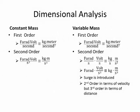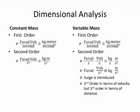Beginning with the case of constant mass, when the equation is in the first order, we have for the electrical domain units of Farad per second. And that is equivalent to the mechanical domain's kilogram meter per second squared. Notice that with respect to time, the mechanical domain is one degree higher than the electrical domain. When we take these equations to the second order by differentiating them, the electrical domain results in a Farad volt per second squared, while the equivalent result in the mechanical domain is kilogram meters per second cubed. And again, the mechanical domain is one degree higher than the electrical domain.